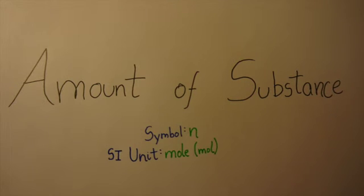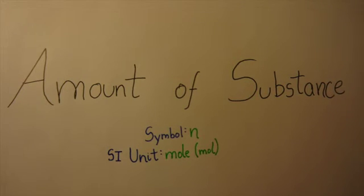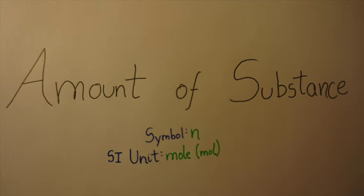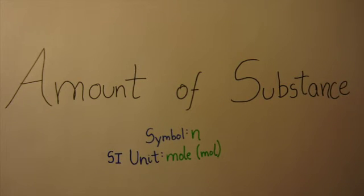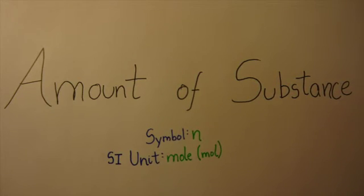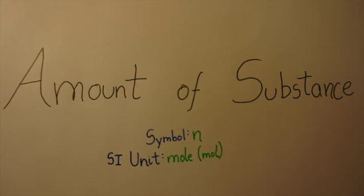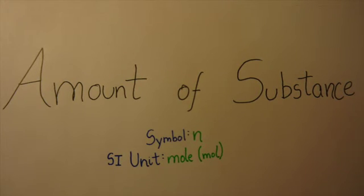The mole can be defined as a quantity of matter that contains the same number of particles as the number of atoms in 12 grams of carbon-12, the isotope of carbon with relative atomic mass 12, which in other words is the number of particles equal to the Avogadro's constant.